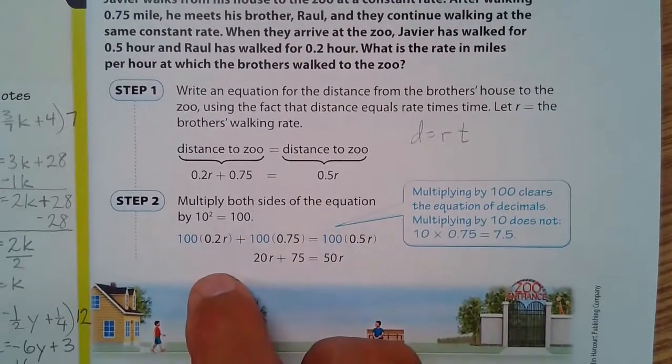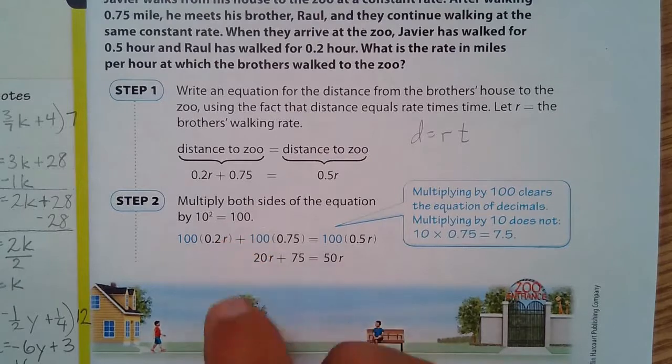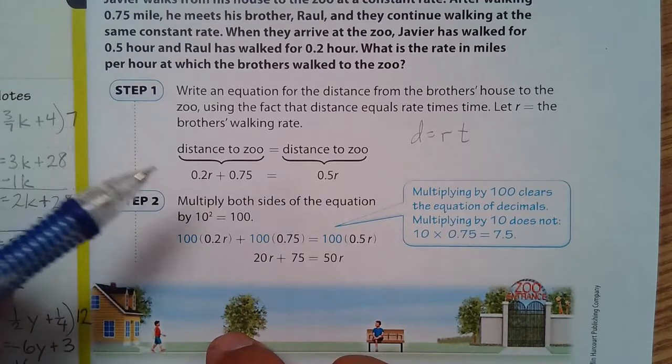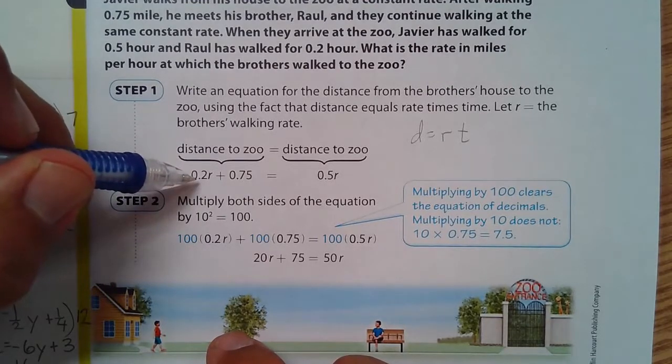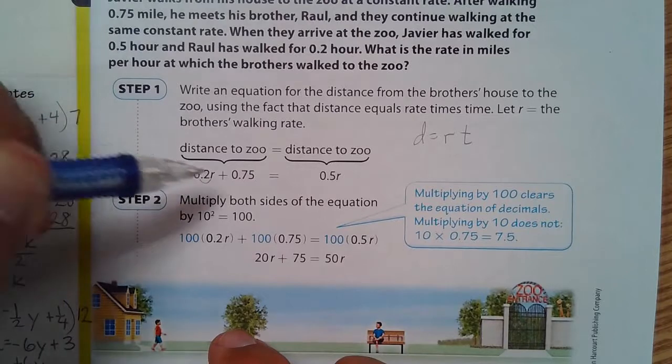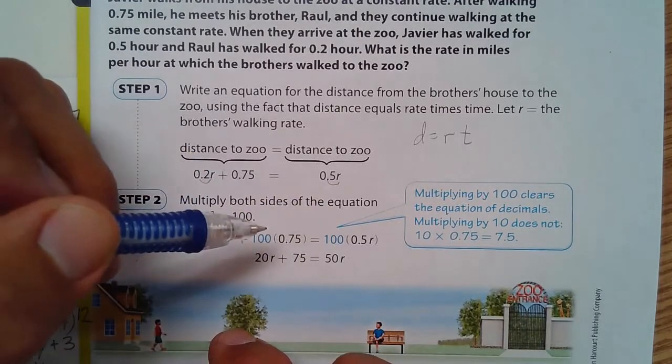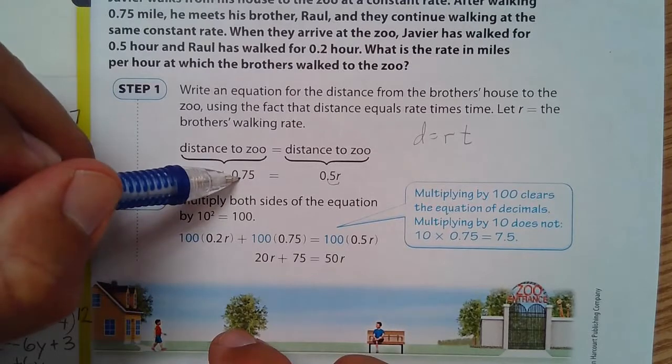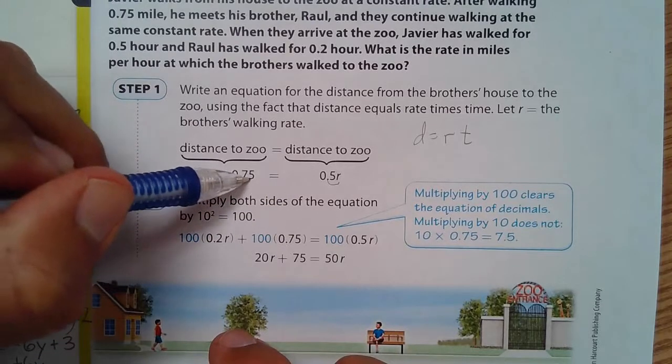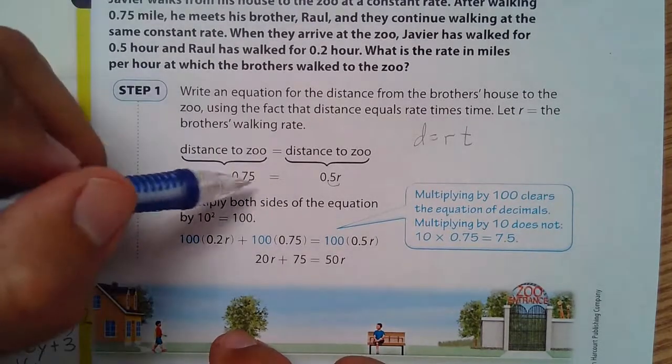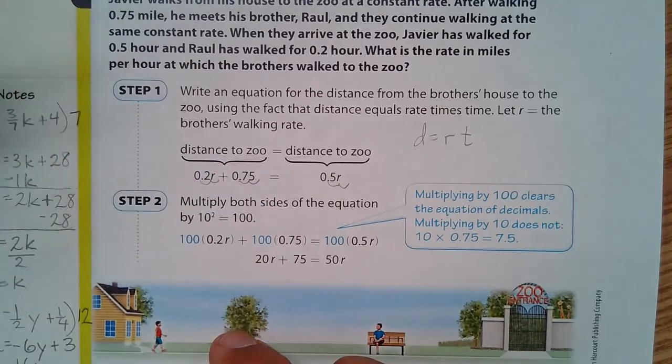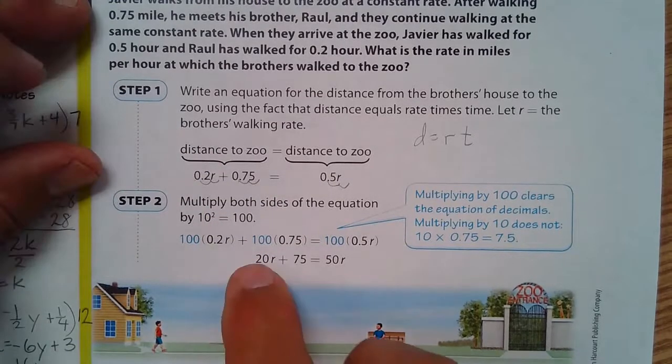Multiply both sides of the equation by 10 to the second, or 100. We have to multiply by 100 because we want to get rid of the decimals. To get rid of the decimal here, you have to multiply by 10, but this one has to be moved twice. So if we move, if we multiply one item by 10, you have to multiply everything by 10. If that needs to get moved twice, then everything needs to get moved twice to the right. And when we do so, we've gotten rid of all the decimals.